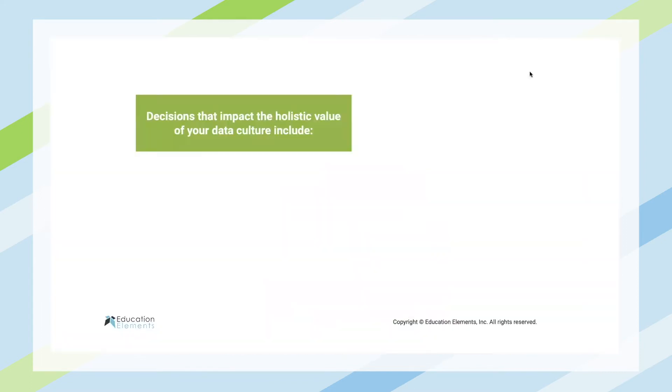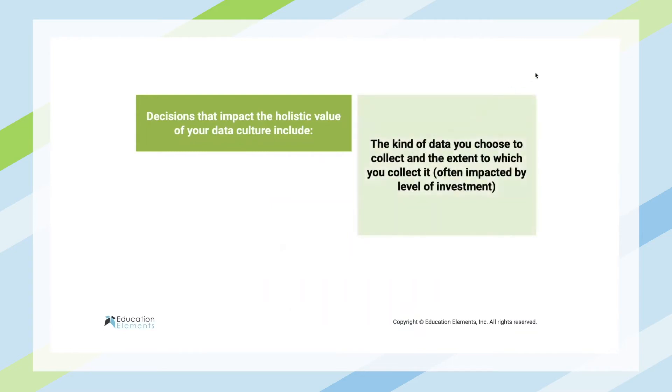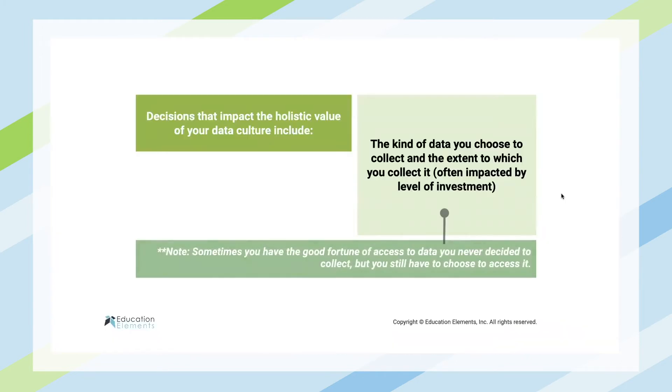Because of that, there are two critical decisions we want to draw your attention to. The first is the kind of data you choose to collect and the extent to which you collect it. Data collection is a very active thing — you have to decide this information matters, invest resources into collecting and storing it. Sometimes you have the good fortune of having data you didn't actively decide to collect, but typically you've got to actively decide to collect it because it matters.